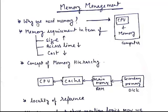The first question is: why do we need memory? A computer system is basically a collection of CPU plus memory. Without memory, the CPU cannot execute anything, and if the CPU is not available, then memory is nothing without a CPU.